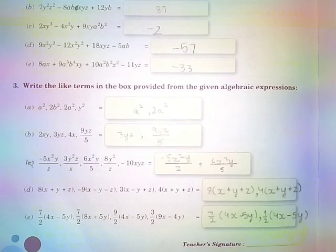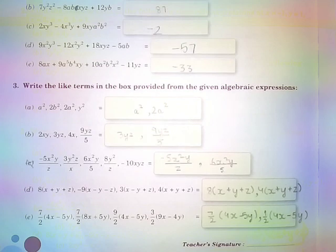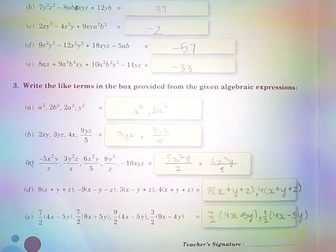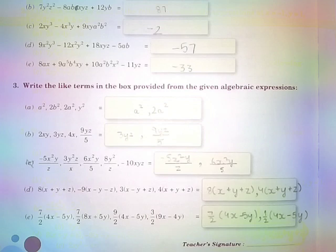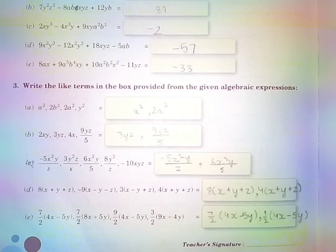Part B: 2xy, 3yz, 4x, 9yz/5 — the like terms are 3yz and 9yz/5. Part C: −5x²y/z, 3y²z/x, 6x²y/5, 8y²/y, −10xy — the like terms are −5x²y/z and 6x²y/5.